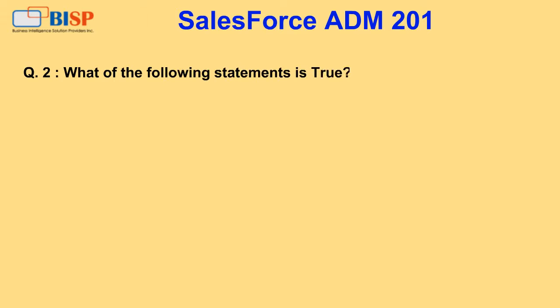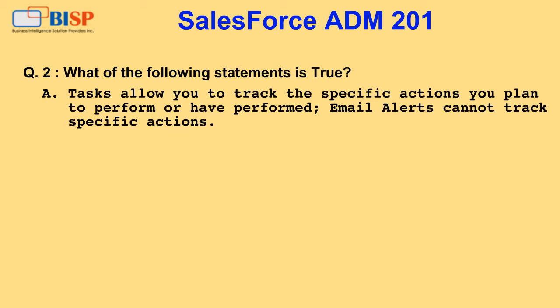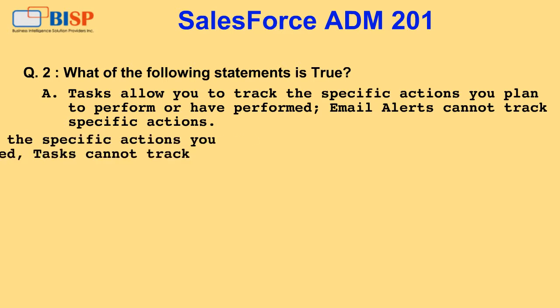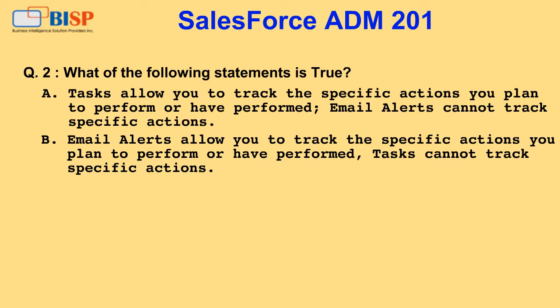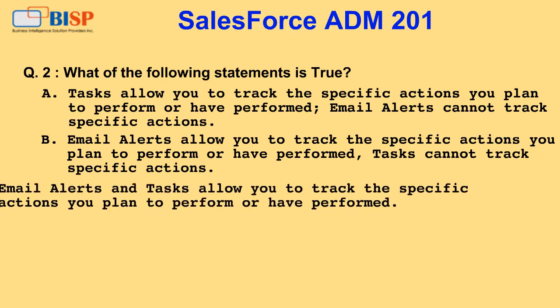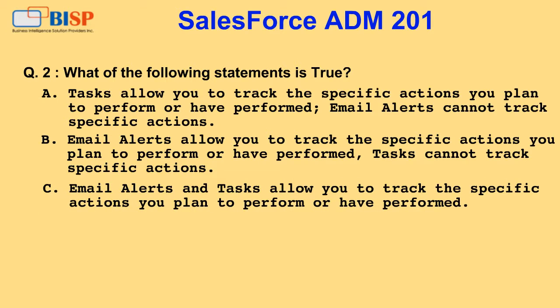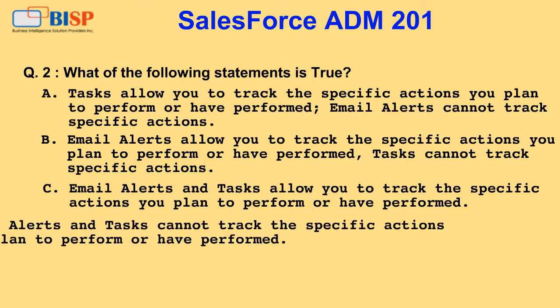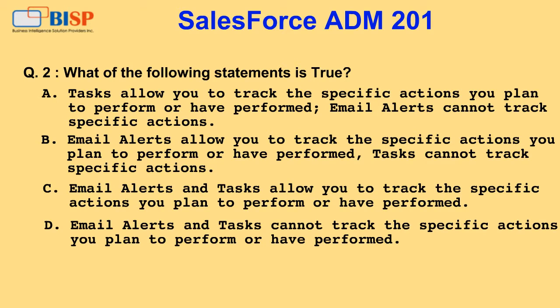Question 2. What of the following statements is true? A. Tasks allow you to track the specific actions you plan to perform or have performed. Email alerts cannot track specific actions. B. Email alerts allow you to track the specific actions you plan to perform or have performed. Tasks cannot track specific actions. C. Email alerts and tasks allow you to track the specific actions you plan to perform or have performed. D. Email alerts and tasks cannot track the specific actions you plan to perform or have performed.